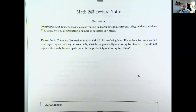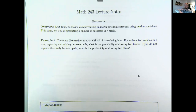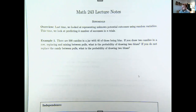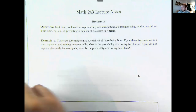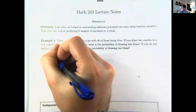Let's start with a situation involving candies in a jar. There are 500 candies in a jar, 40 of those are blue. If you draw two candies in a row with replacement and mixing between pulls, what's the probability that you draw two blue in a row? If you do not replace the candy between pulls, what is the probability of drawing two blues? In the first situation, putting the candy back means we're looking at the independent scenario.